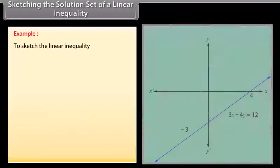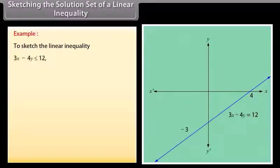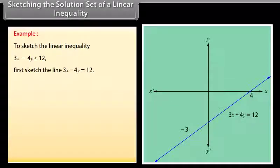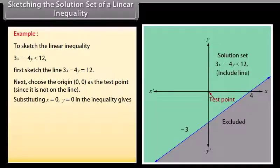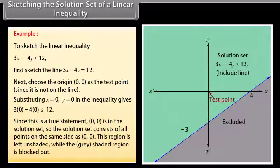Example: To sketch the linear inequality 3X minus 4Y ≤ 12. First, sketch the line 3X minus 4Y = 12. Next, choose the origin (0, 0) as the test point since it is not on the line. Substituting X = 0, Y = 0 gives 3(0) minus 4(0) ≤ 12, which is a true statement. So (0, 0) is in the solution set, and the solution set consists of all points on the same side as (0, 0). This region is left unshaded, while the gray shaded region is blocked out.